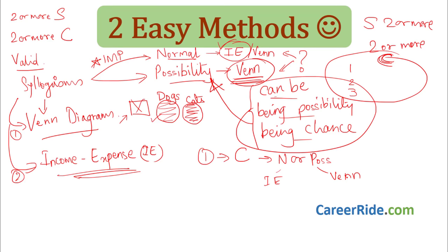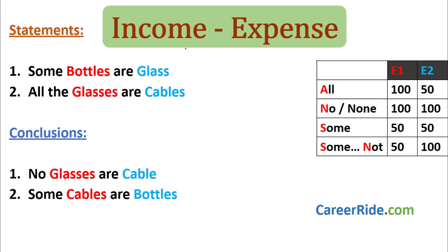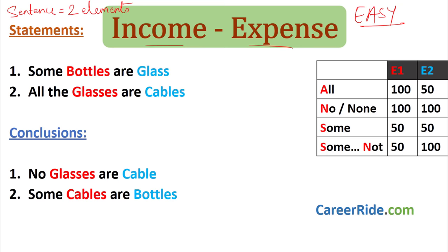Let us move on to understanding the income expenditure method. Don't worry — it is extremely easy. Always remember that in the statements and conclusions, every sentence will have only two elements. For example, 'Some bottles are glass' — the elements are 'bottles' and 'glass'. Words like 'some', 'all', 'the', 'are', 'is' are joining words and are not elements. Every sentence will have only two elements, whether it is a statement or a conclusion.